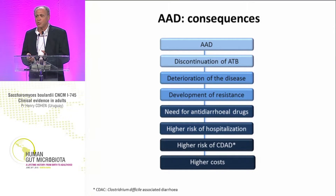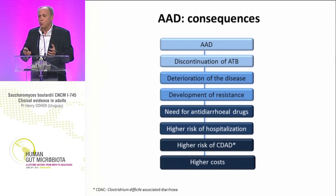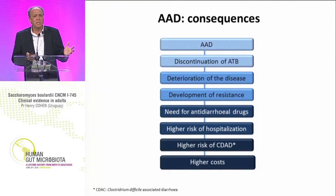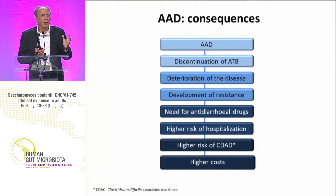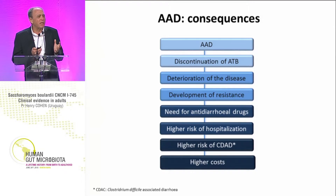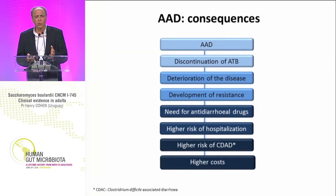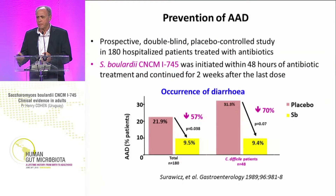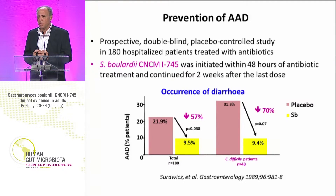What are the consequences of AAD? First of all, the antibiotic that was supplied for any reason should be stopped, so the original disease would become even more serious. There is an increase of resistance to antibiotics in the population. Many times the patient will need to take antidiarrheal medication to improve the situation. There is an increase of hospitalization, a higher risk of CDAD, and for all of us it represents higher cost. Now let's see what is the role of Saccharomyces boulardii in the prevention of AAD.